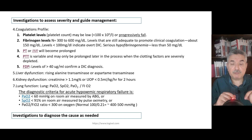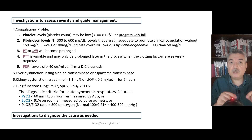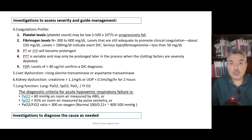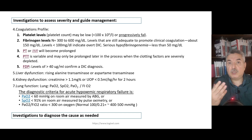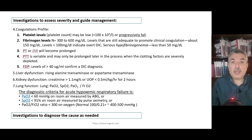For lung assessment: hypoxic respiratory failure is diagnosed when oxygen pressure falls below 60 mmHg, or when saturation is at or below 90%. The PaO2/FiO2 ratio (pressure of oxygen divided by fractional inspired oxygen) should be 400–500 normally. Below 300–200 indicates hypoxic respiratory failure.